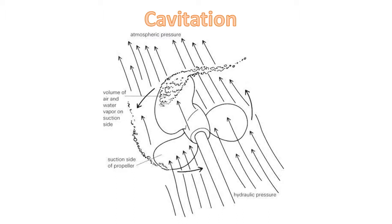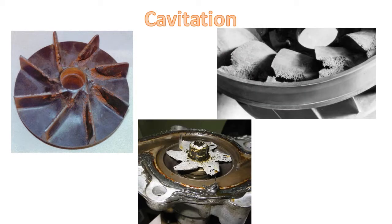The implosion creates a shock wave which impinges on the impeller vanes and face, which can damage the impeller through pitting, erosion, and failure. This activity also creates noise and the pumping efficiency declines due to the high amount of vapor in the system.